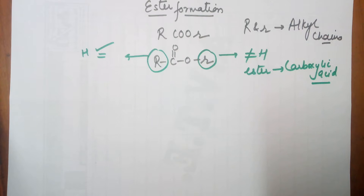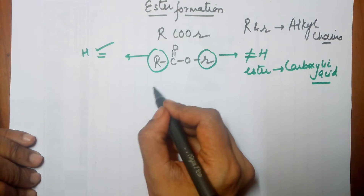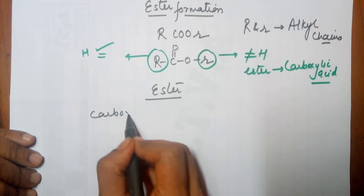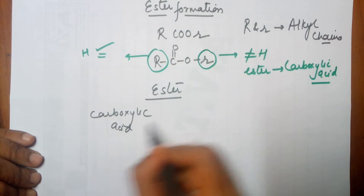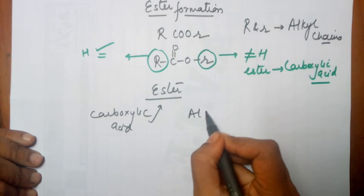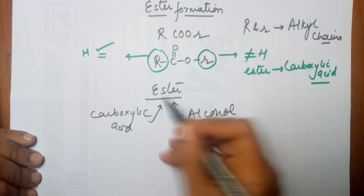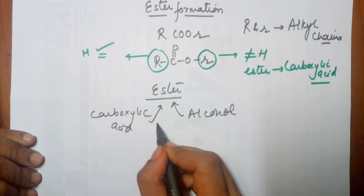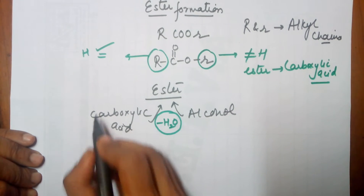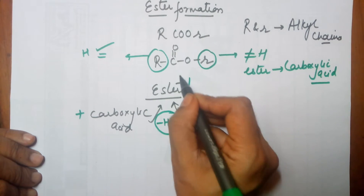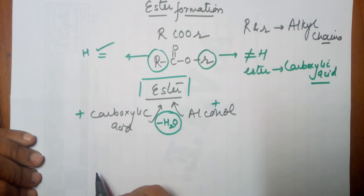Coming to the formation of an ester — if I want to prepare an ester, it is the preparation of an ester that we will be talking about in this class. Your ester is prepared from two compounds: one is carboxylic acid and the second is alcohol. Both of them combine to give you an ester, and while they combine, there is a loss of a water molecule. So you need to add a carboxylic acid, add an alcohol, and remove a water molecule for formation of an ester.